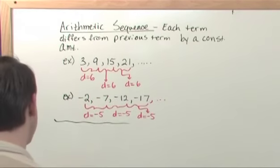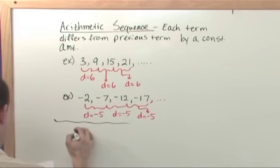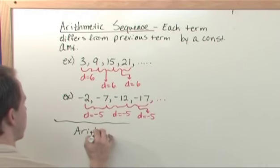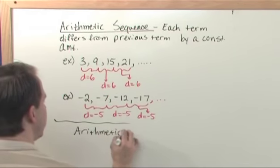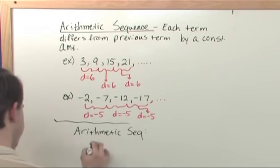Now what trips people up sometimes is when they present in the books the general form of an arithmetic sequence. The general form of it looks like this.